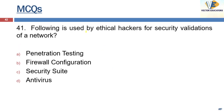What is used by ethical hackers for security validations on a network? It is penetration testing. Through penetration testing, ethical hackers — also called white hat hackers — check the network for vulnerabilities so that appropriate configurations can be done.